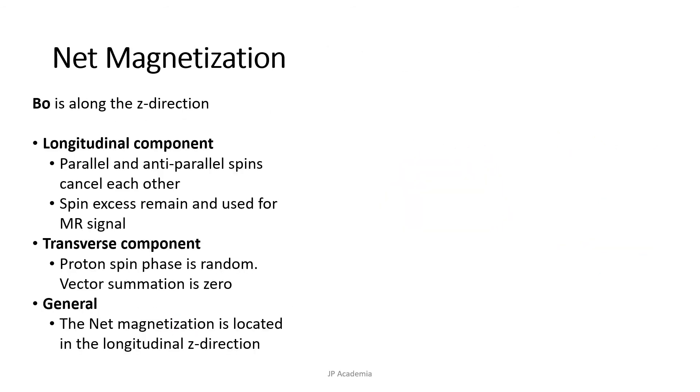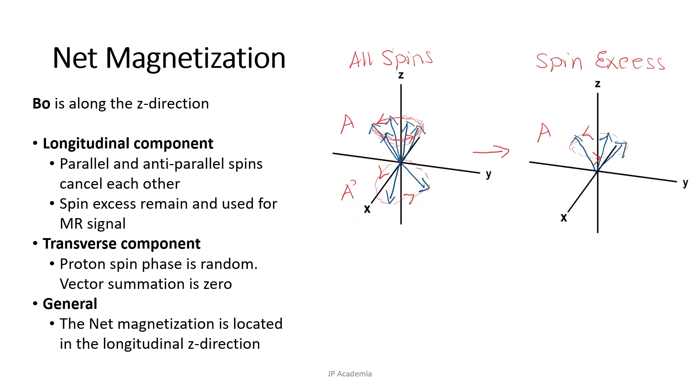From here on, we will present protons as vectors. Each proton magnetization can be considered as a vector as illustrated here in my drawing. Now let us consider my drawing.